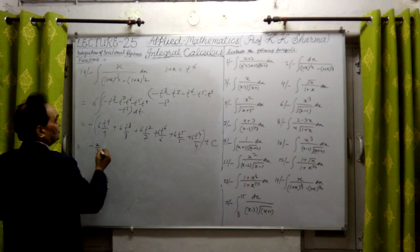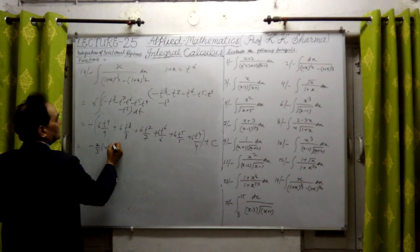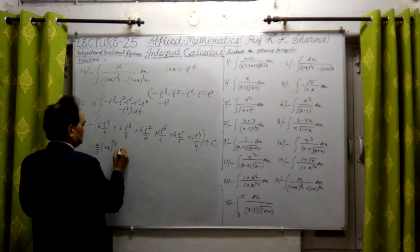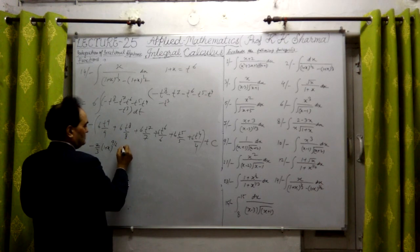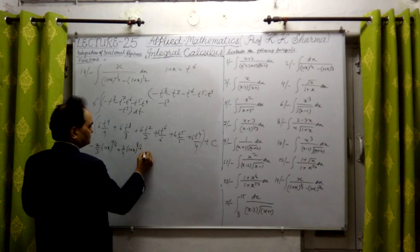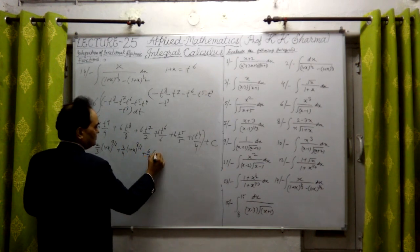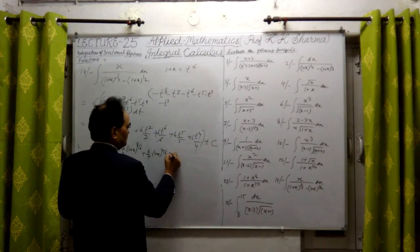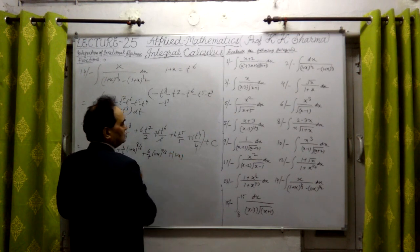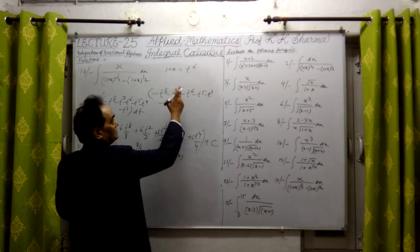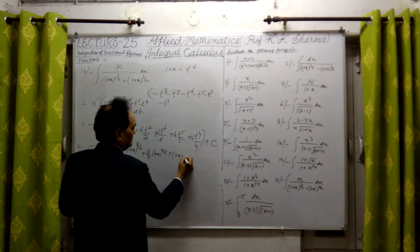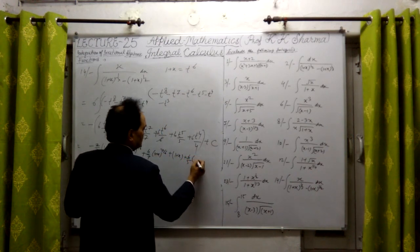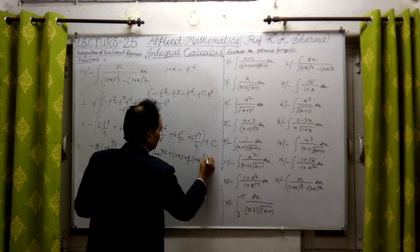Yes, let me write that value of T also. 1 plus G, this is minus 2 by 3 versus. This is minus 6, this is 1 plus G divided by 6. For T6 is equal to, so T6 is equal to 1 plus x plus 6 upon 5. This is 1 plus x whole power 5 by 6, right, understand.